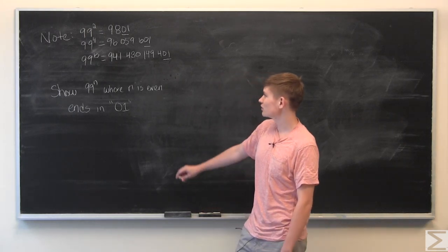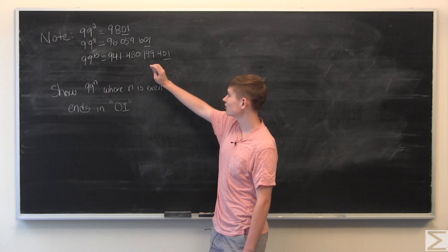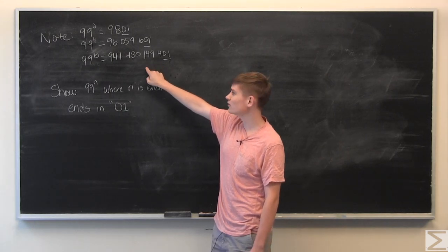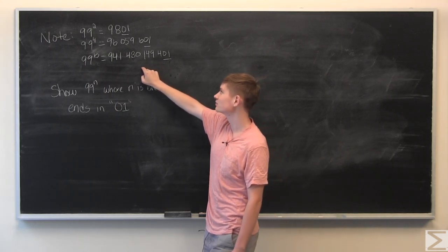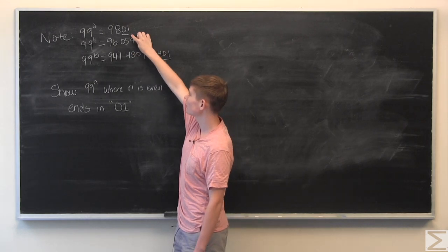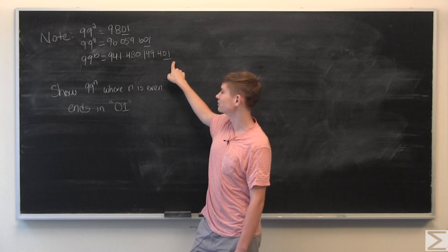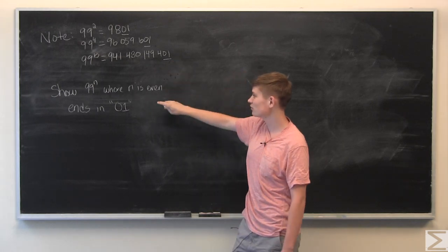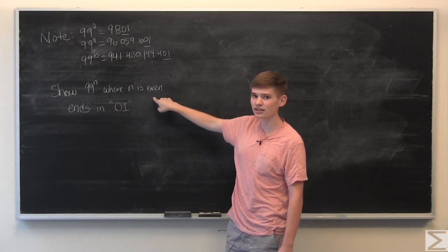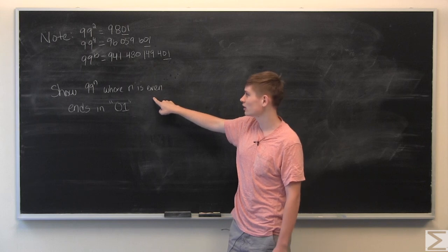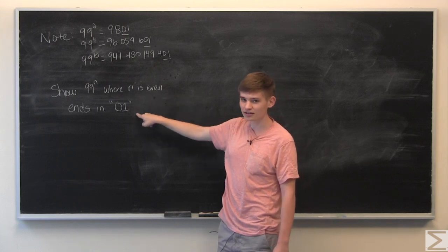So the problem this week was if you started taking even powers of 99 you might notice that all of the numbers end in a 0 and a 1. And so the problem was to show that if 99 is raised to an even power that the number will always end in a 0 and a 1.